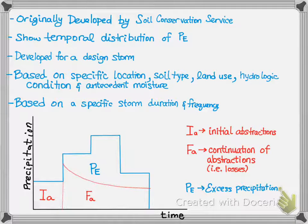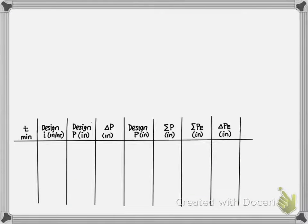So, let's do an example to mimic this. I've created a table at the bottom of this image, where it shows time, design intensity, design rainfall precipitation, delta P, the design P, the summation of P, the summation of excess precipitation, and finally, the change in excess precipitation.